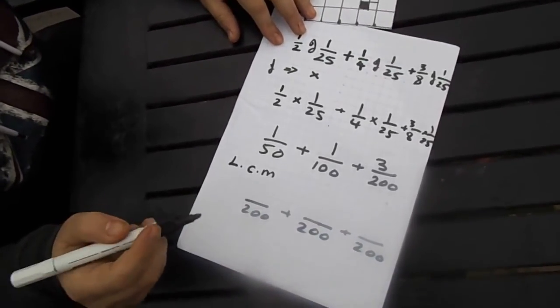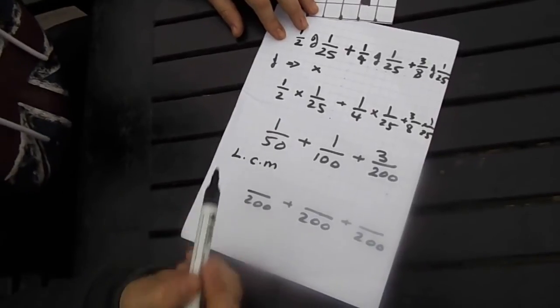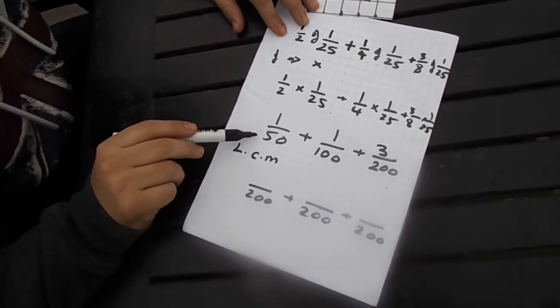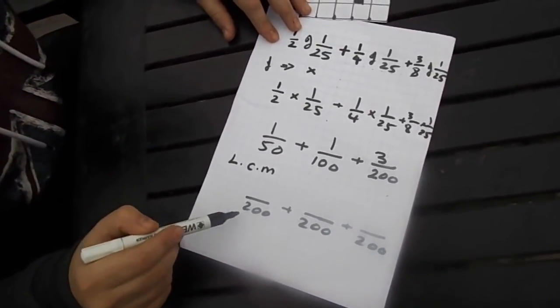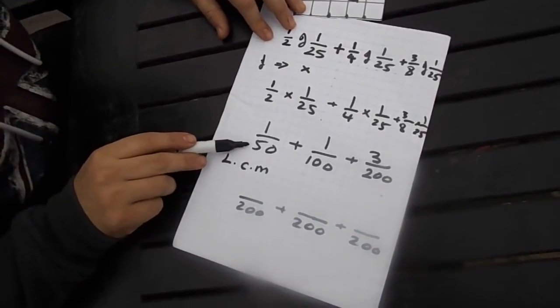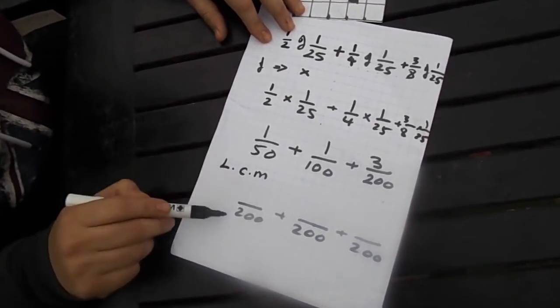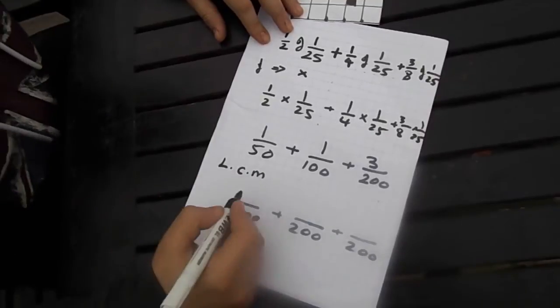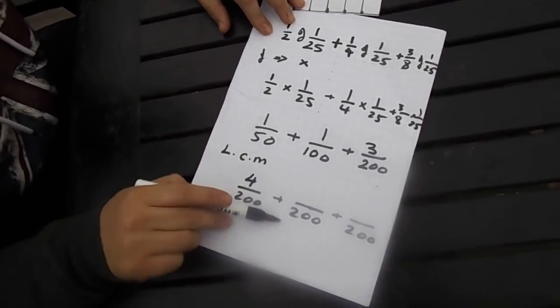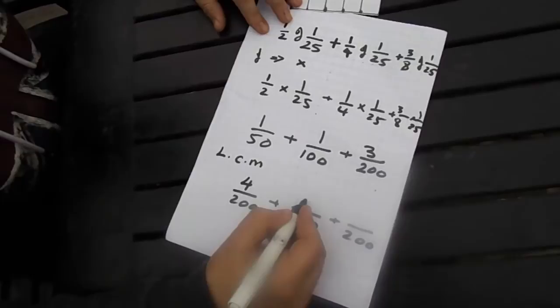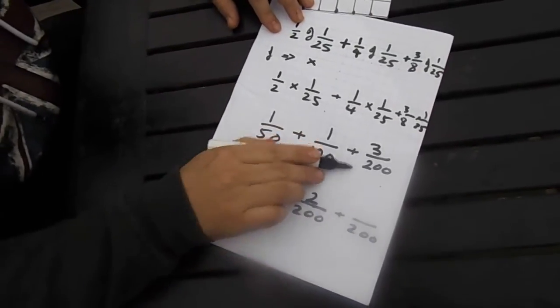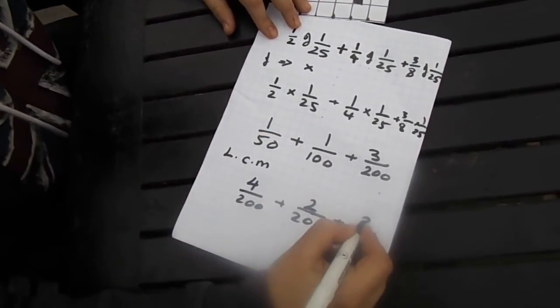Then I've got to find the equivalent fractions here. So 1 out of 50 is the same as something out of 200. So how do you get from 50 to 200? You times it by 4, you do the same to the top. You double 100, you get to 200. So it's easy. Just double 1, you get 2. That one stays the same.